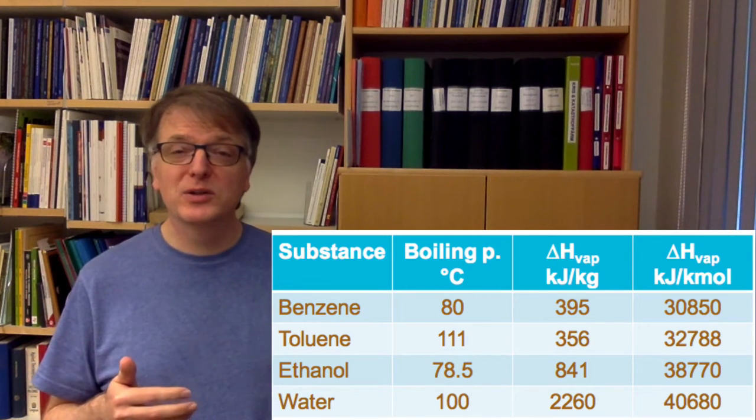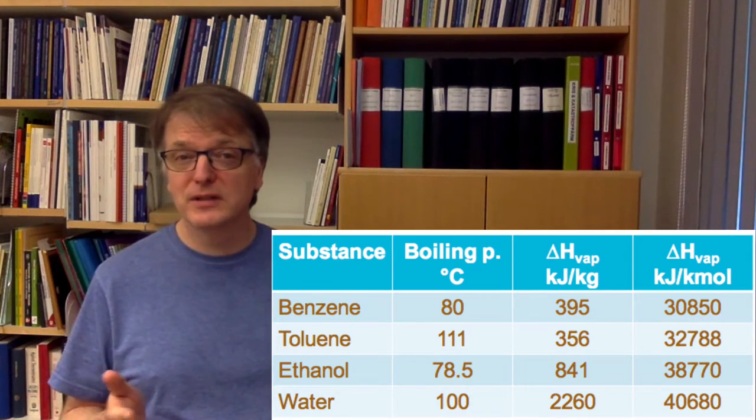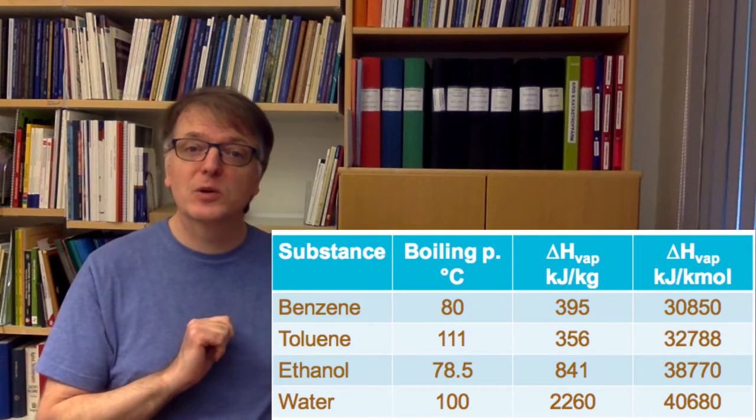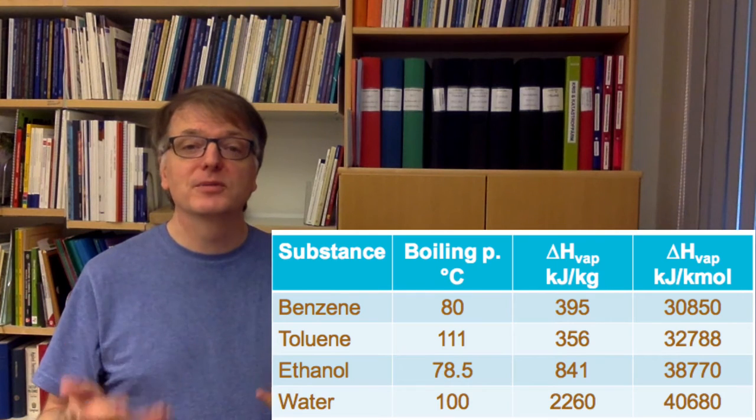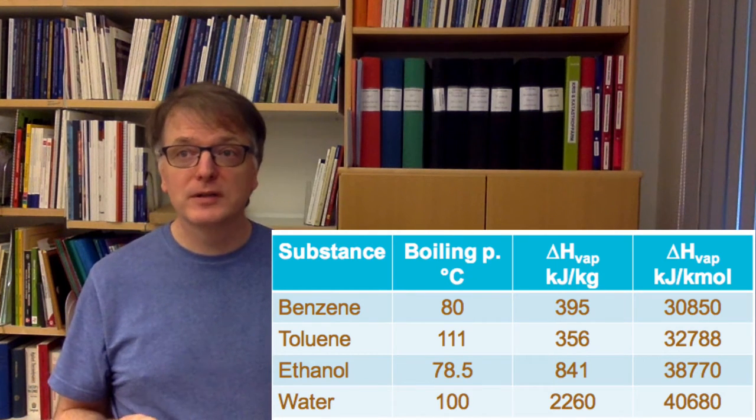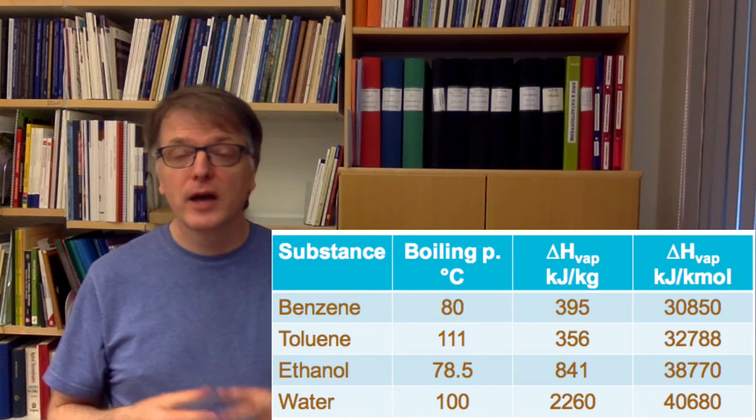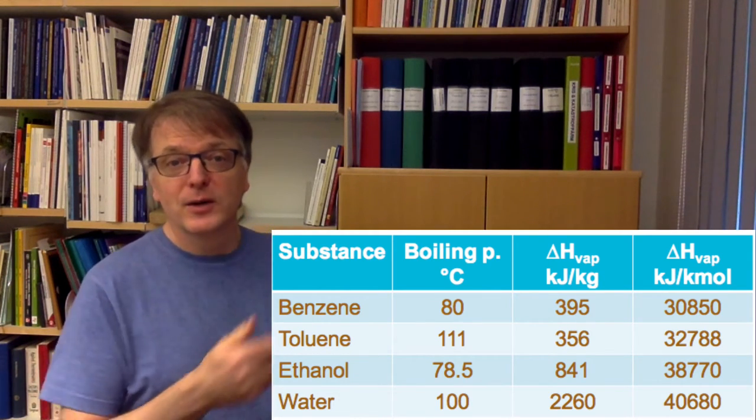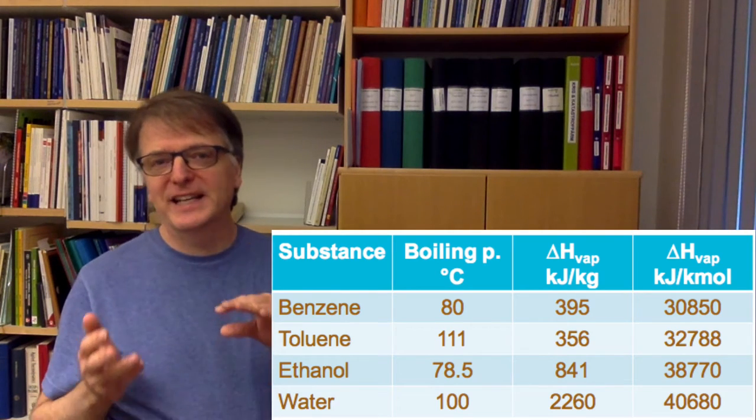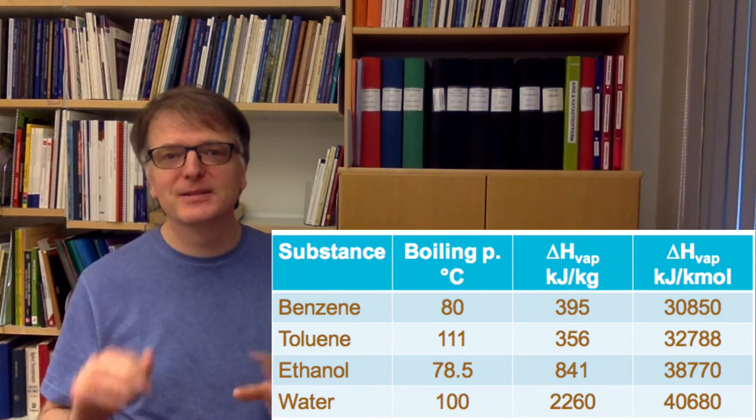840 compared to 2300 almost, that's a huge difference. But if instead we take it in kilojoule per kilomole they become similar. Thus we need to deal with molar fluxes, and if you use molar fluxes you see that the evaporation enthalpies are not exactly the same but they are similar at least.